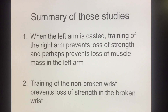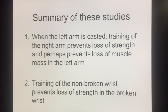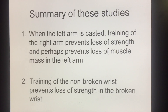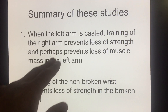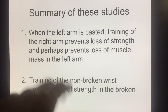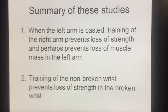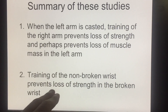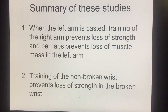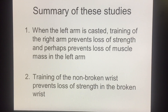This is a summary of these two studies. When the left arm is casted, training of the right arm prevents loss of strength and perhaps even loss of muscle mass in the left arm. And training of the non-broken wrist prevents loss of strength in the broken wrist.